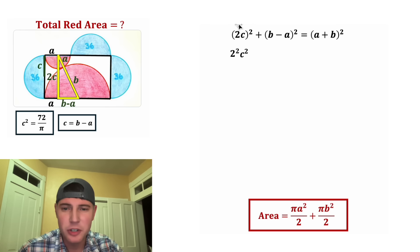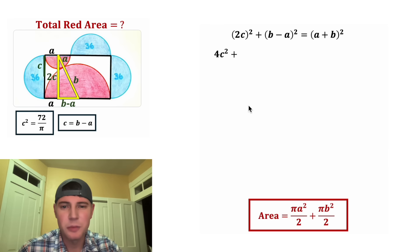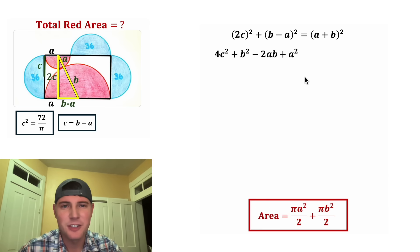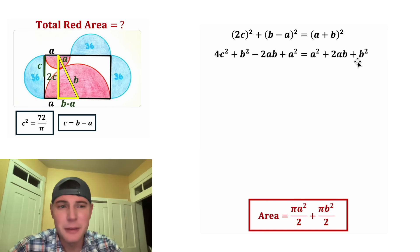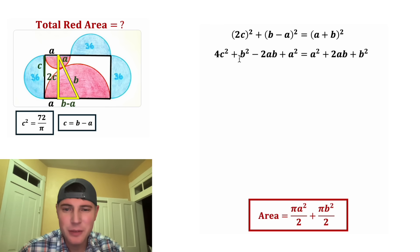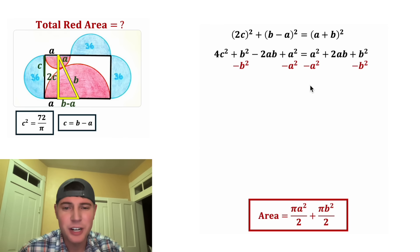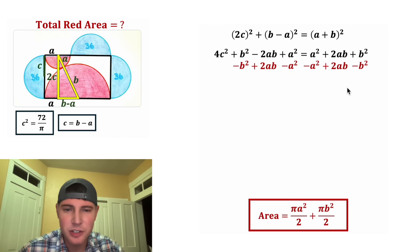It'll be (2c)² + (b − a)² = (a + b)². For the first term, squaring gives 4c². Then (b − a)² = b² − 2ab + a². And (a + b)² = a² + 2ab + b². Both sides have b² and a², so let's subtract b² from both sides and subtract a² from both sides.